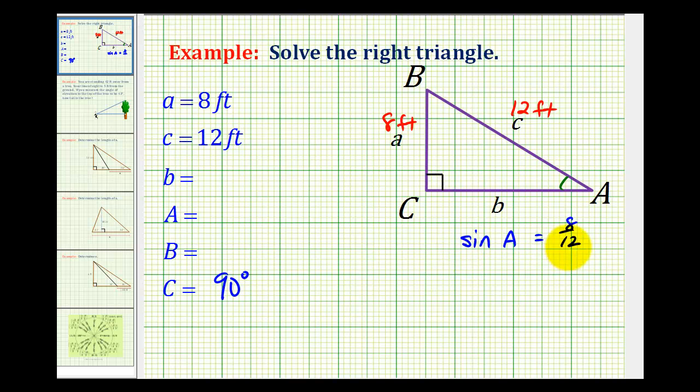Now we can solve this equation for A if we take the inverse sine of both sides of the equation. Inverse sine sine A is equal to A, since these are inverses of one another, they undo each other.